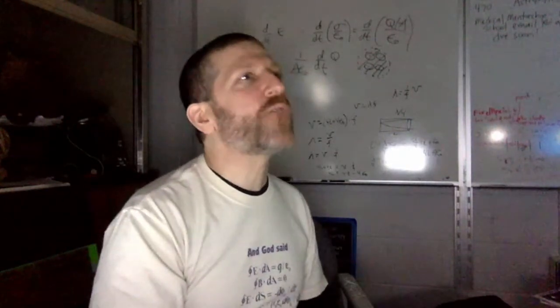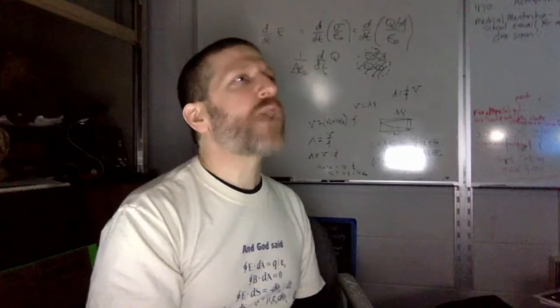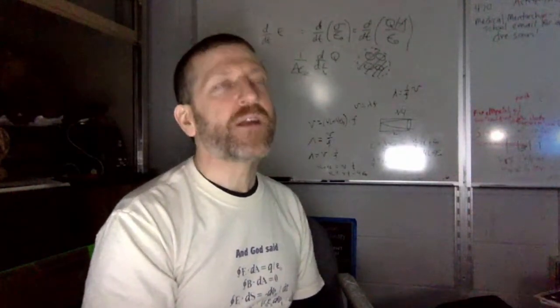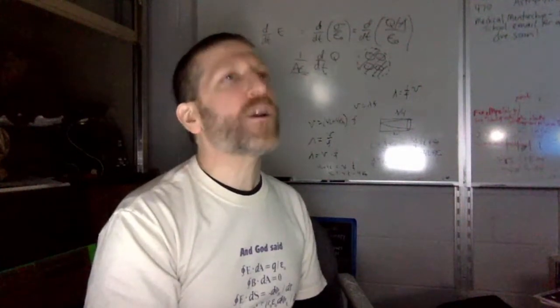The next right hand rule is the direction of the magnetic field due to a current carrying wire. For short, it's called the wire right hand rule.